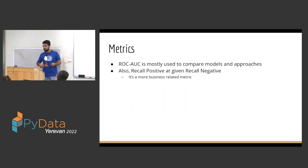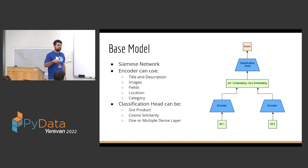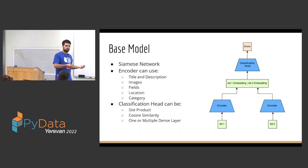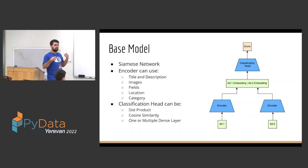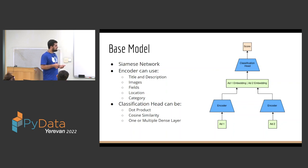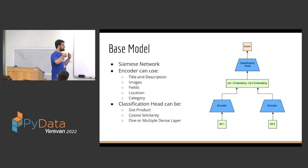Our base model is a Siamese network, where the encoders share the same weights and they are updated together. We can encode many features: title, description, images, fields, location, and category. For the classification head we can use dot product, cosine similarity, or one or multiple dense layers. We usually use dense layers because we want to add other features there.